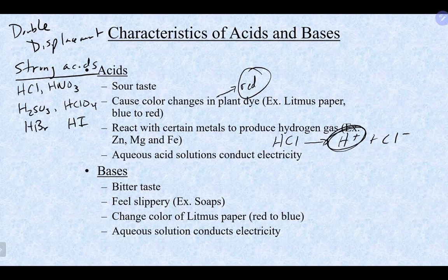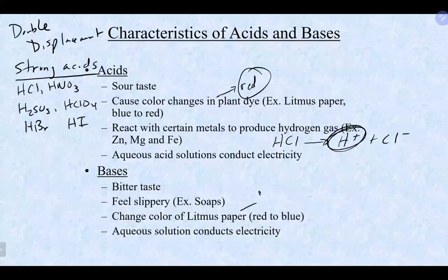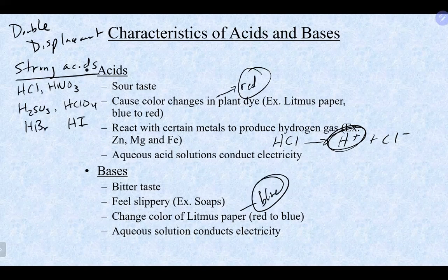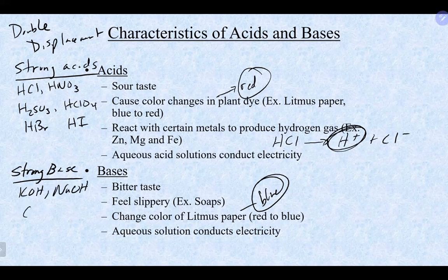Bases, on the other hand, have a bitter taste and feel slippery. Litmus paper turns blue if it's basic. There are some strong bases — a lot of group 1 and group 2 elements with hydroxide, such as KOH, sodium hydroxide, calcium hydroxide, strontium hydroxide, and barium hydroxide. Those are typically your strong bases.